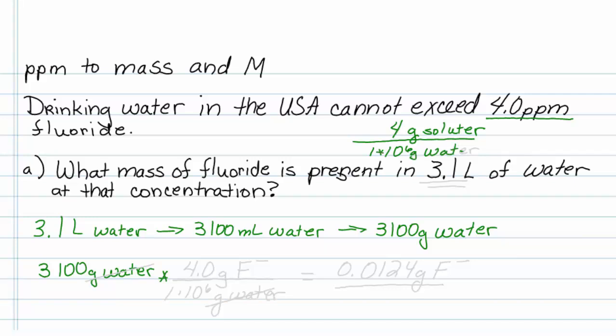usually of solvent, which is water. So I'm going to write that ratio here. 4 grams of our solute, which is fluoride, F minus, in a million grams of water.